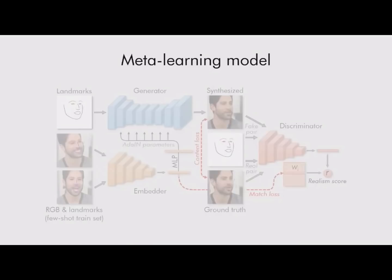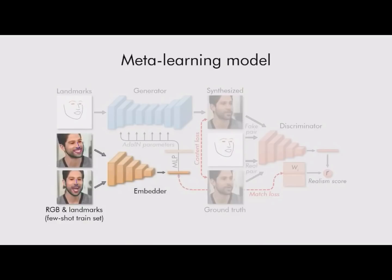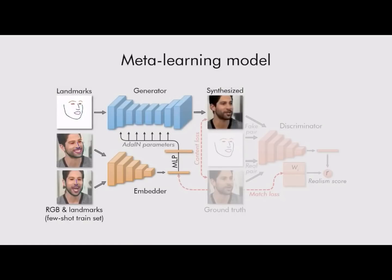Our approach uses a meta-learning stage performed on a large dataset of videos. For the results in this presentation, the VoxCeleb2 dataset is used. Three networks are trained during the meta-learning stage: the embedder network maps frames concatenated with landmarks into vectors containing pose-independent information. These vectors are used to initialize the parameters of adapted layers inside the generator network, which maps landmarks into synthesized video. Finally, the discriminator network assesses the realism, pose, and identity preservation of the generated frames.